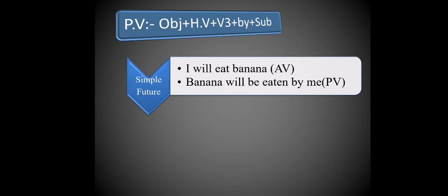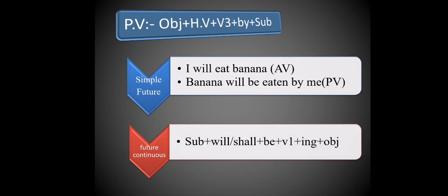Next, simple future tense: 'I will eat banana.' Same steps — object first: 'banana.' For simple future, use 'will be.' Then V3 form 'eaten,' then 'by me.' So: 'Banana will be eaten by me.' For future continuous, the helping verb would be 'will be,' but there is no passive voice for future continuous.